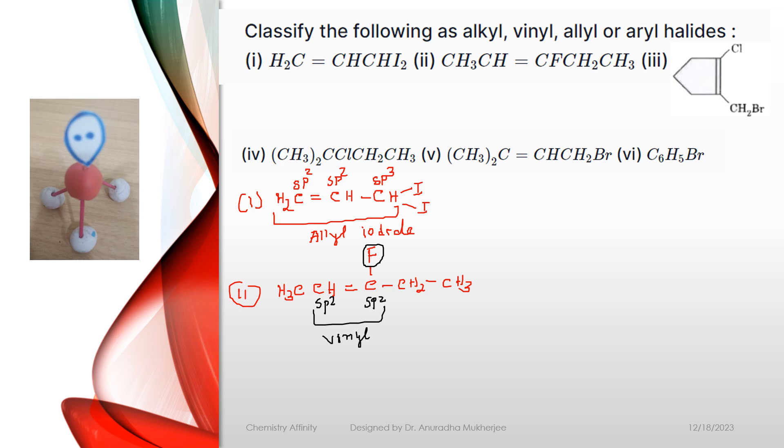Next example: it is a cyclopentene group with chlorine and CH2Br. Now, if we look into the structure, this carbon is Sp2, this is carbon Sp2 and third carbon is Sp3. Now, with this Sp3 carbon, bromine is connected, so Sp2, Sp2, Sp3, so it is an allyl bromide.